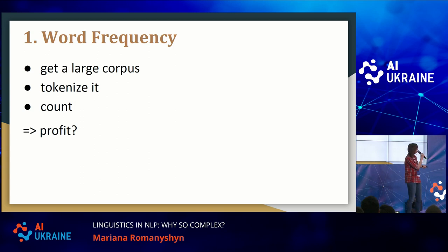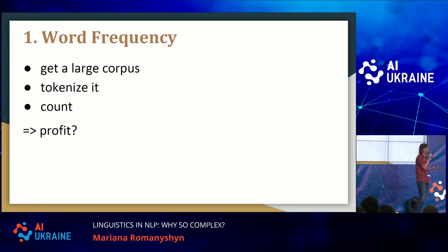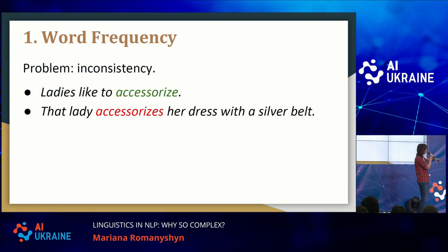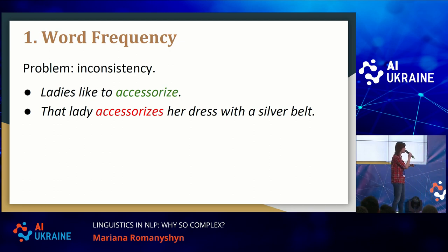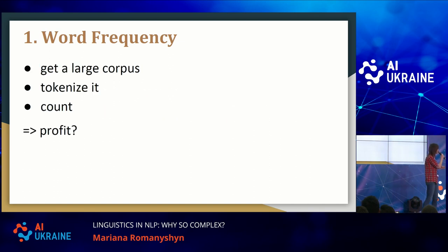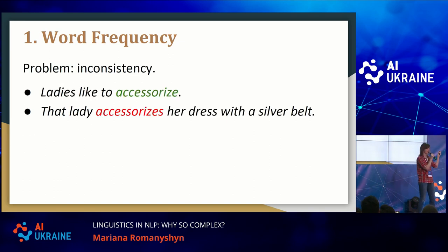The first feature we were talking about is word frequency. Complex words that appear in text are usually low-frequency words — we don't use them every day, and that's why not many people know them. The simplest approach would be to get a large corpus, tokenize it, and count how many times you see each word. But you will immediately see a problem: your model is classifying words inconsistently because it will classify the word "accessorize" as simple but "accessorizes" as a complex word.